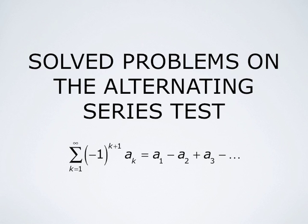An alternating series is a series of the type summation k from 1 to infinity of negative 1 to the power k plus 1 times ak. It starts a1 minus a2 plus a3 minus a4 plus and so forth, where the numbers ak are assumed to be non-negative.